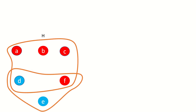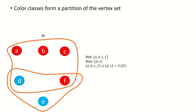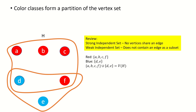Moving on, note that color classes — which are sets of vertices assigned the same color — form a partition of the vertex set of the hypergraph. Next, remember that there are usually two notions of independent sets in hypergraph theory: strong independent sets, which are sets of vertices that are pairwise non-adjacent, and weak independent sets, which are sets of vertices that do not contain an edge as a subset.